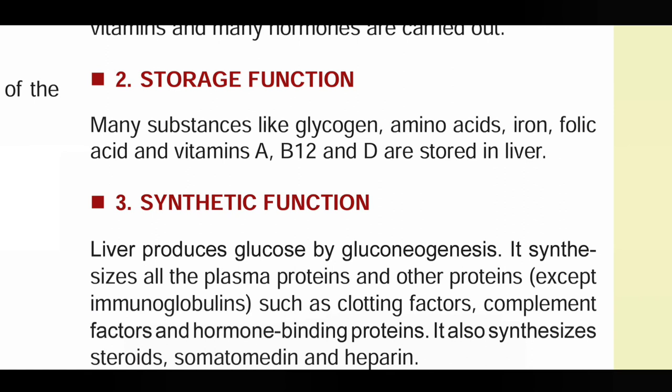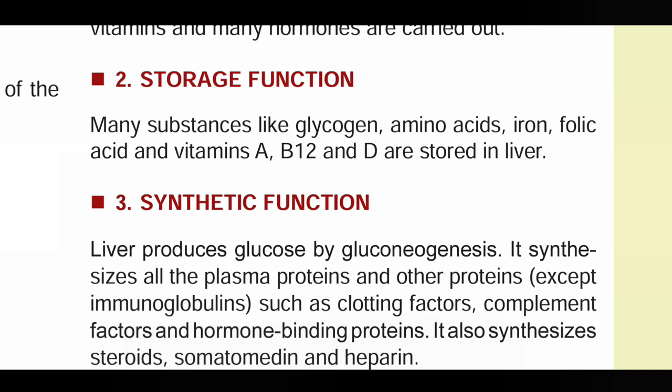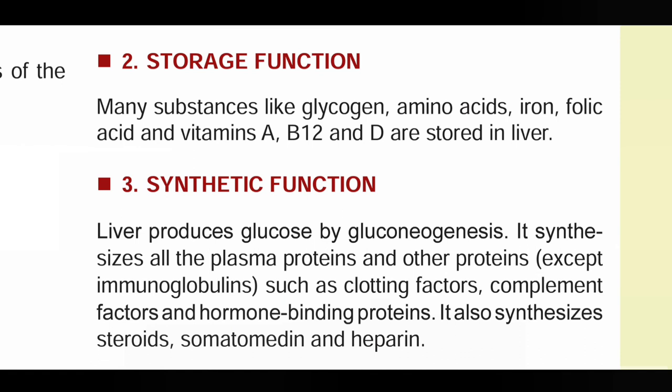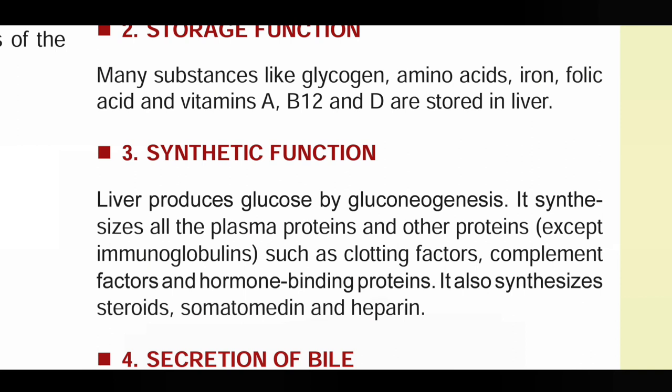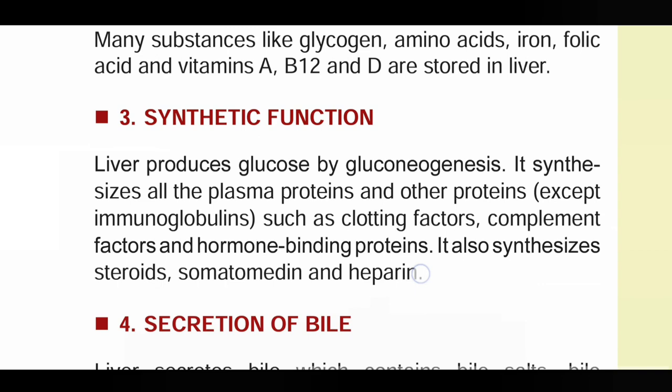Storage function: many substances like glycogen, amino acids, iron, folic acid, vitamin A, B12, and D are stored in the liver. Iron, folic acid, and B12 are necessary to make blood, so if they are not stored adequately there will be deficiencies, which can also lead to anemia.